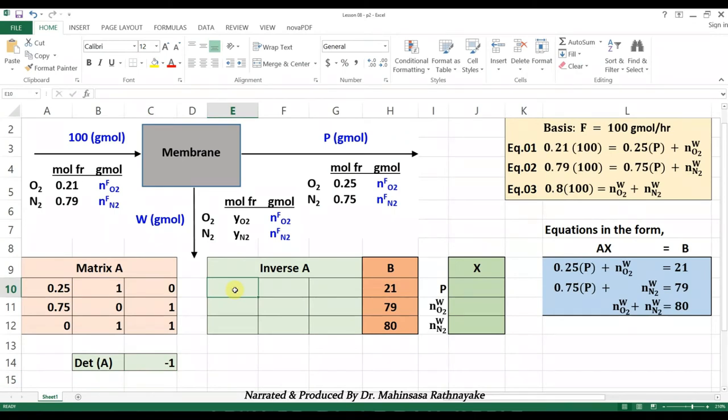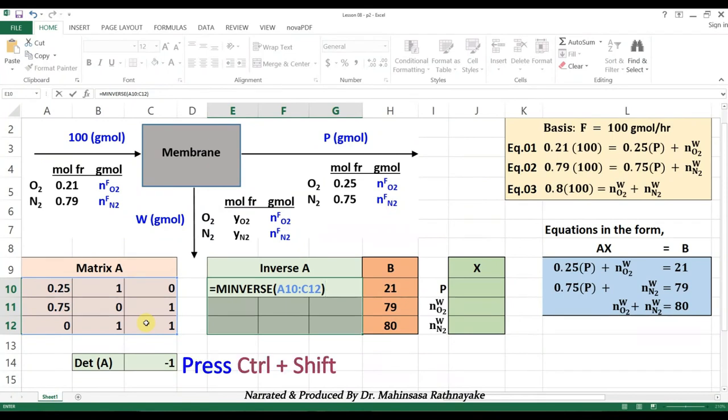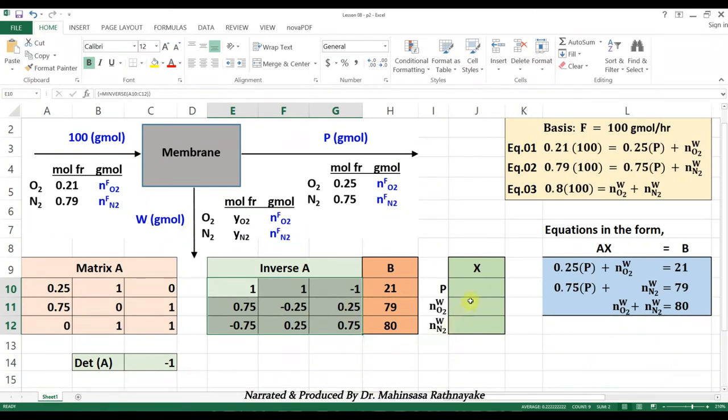The solution for matrix X equals A inverse B. Therefore, we should first find inverse matrix of A. The function for inverse matrix is MINVERSE. Highlight the cells for the inverse matrix and then apply the function and mark the array as the cells of matrix A. Then press ctrl plus shift plus enter. So we obtain the inverse matrix in array form.